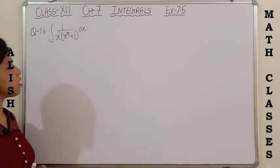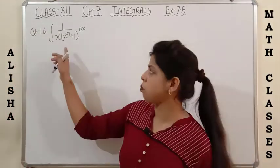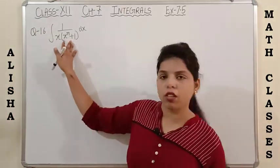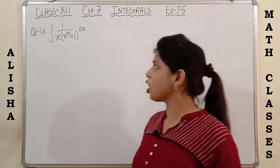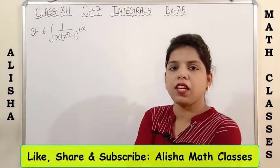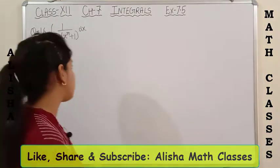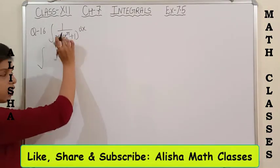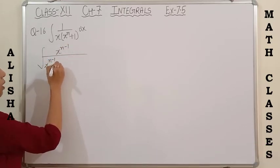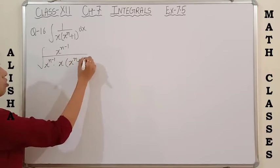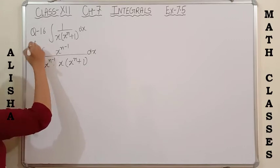Next is question number 16: integration of 1 upon x into (x to the power n plus 1). We can't factor x to the power n plus 1 directly, so we think differently. The derivative of x to the power n is n times x to the power (n minus 1). The hint is to multiply numerator and denominator by x to the power (n minus 1) to create that derivative in the numerator. Please mark this as a point to remember.